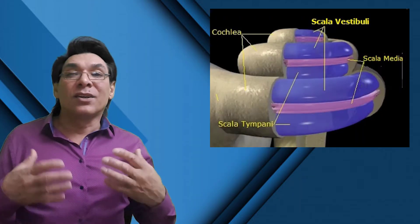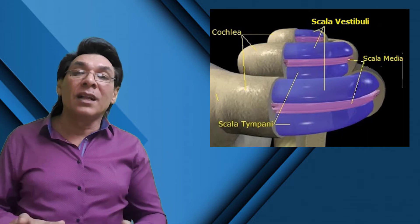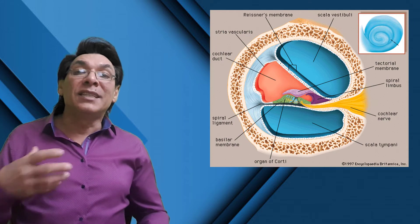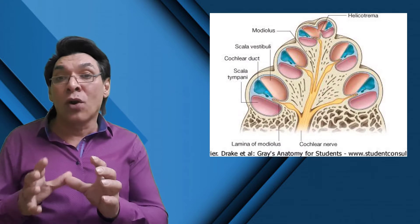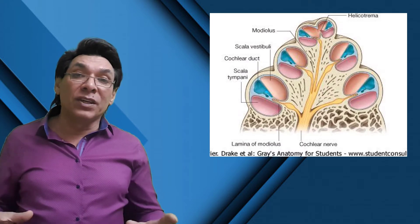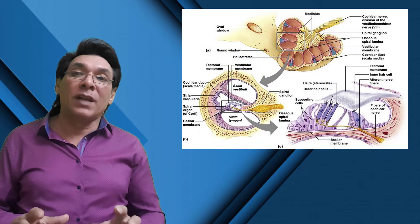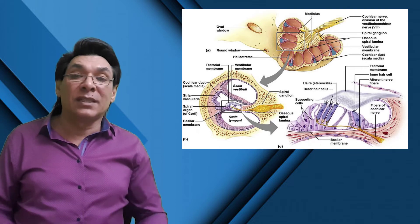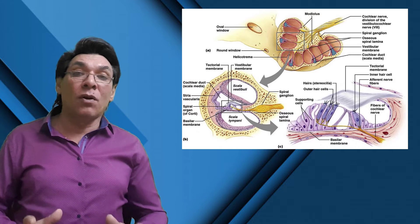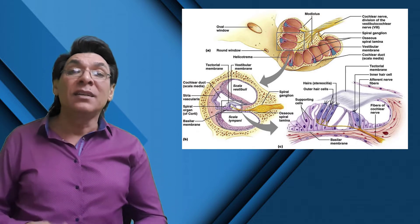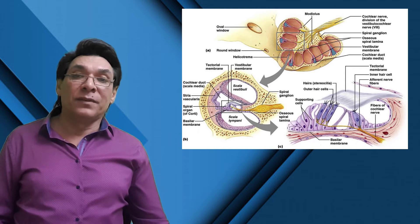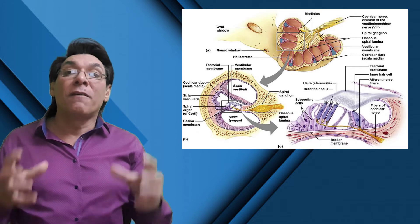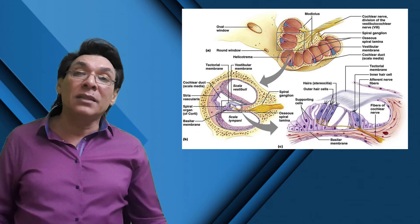The cochlea is a coiled tubular system with three fluid-filled longitudinal compartments: the scala vestibuli, the cochlear duct, and the scala tympani. At the helicotrema at the apex, the fluid in the top and bottom compartments is continuous. The scala vestibuli is the upper bony compartment, leading from the oval window to the apex, filled with perilymph. The scala tympani is the lower bony compartment, extending from the apex to the round window, filled with perilymph. These are separated by the cochlear duct, a medial duct filled with endolymph.